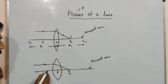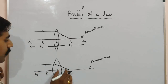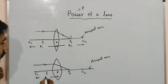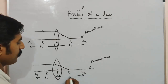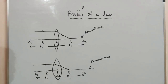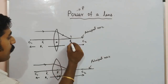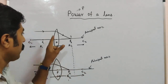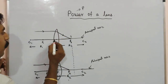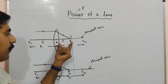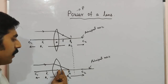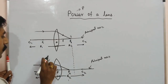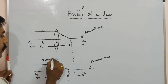This is F1 and this is F2 — the focal points. The center of curvature is C1 on one side and C2 on the other. The focal length is the distance to the focal point. If curvature is higher, the focal length is lower. If curvature is less, the focal length is larger. So here power is maximum, and here power is minimum.